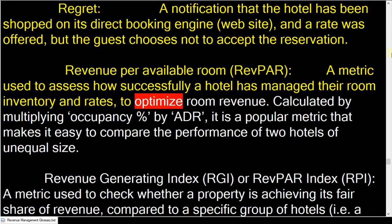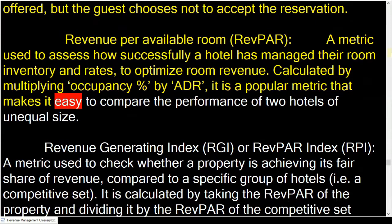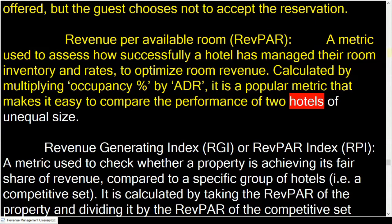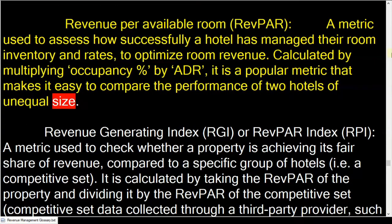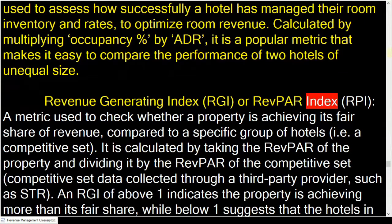Revenue per available room (RevPAR): a metric used to assess how successfully a hotel has managed their room inventory and rates to optimize room revenue. It is calculated by multiplying occupancy percent by ADR. It is a popular metric that makes it easy to compare the performance of two hotels of unequal size.